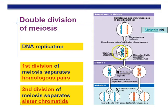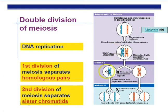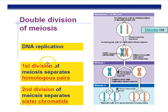We're starting with a diploid cell. Remember, diploid means two sets. When we divide the homologous chromosomes into separate cells, now we only have one set of chromosomes, and that's haploid. So during meiosis I, we're going from diploid to haploid. The first cell division of meiosis divides the homologous chromosomes — the homologous pairs.